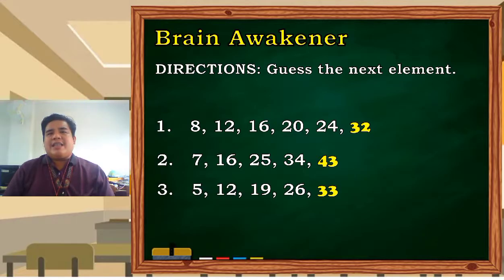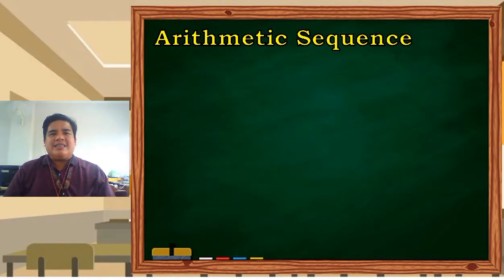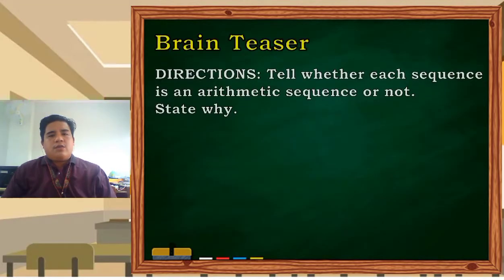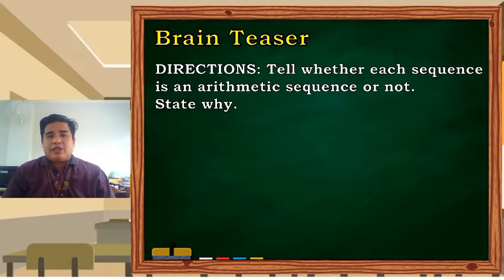So let us define now what is an arithmetic sequence. An arithmetic sequence is a sequence where every term after the first is obtained by adding a constant called the common difference. As you would see, constant is highlighted. When we say constant, it doesn't change. It doesn't change the number, and that number is what we call the common difference.